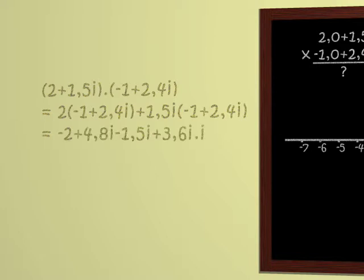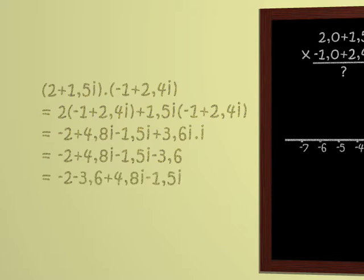Which is minus 2 plus 4.8i minus 1.5i plus 3.6i times i. But i squared is minus 1, since we invented i for this purpose. So we get minus 2 plus 4.8i minus 1.5i minus 3.6. And tidying up, that gives us minus 2 minus 3.6 plus 4.8i minus 1.5i.